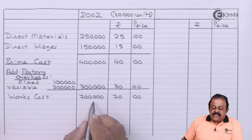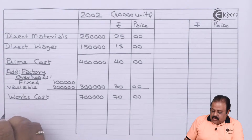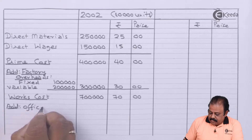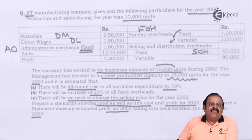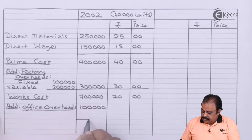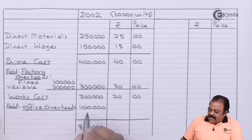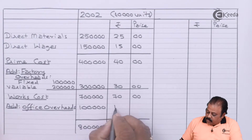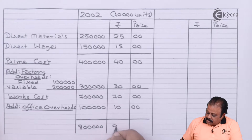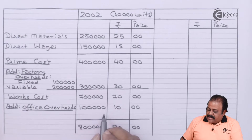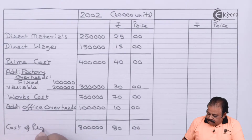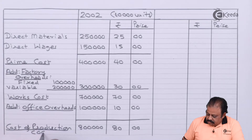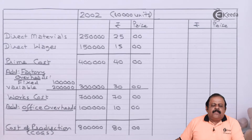We got works cost of ₹7,00,000. To this we are going to add office and administration overheads, which are totally fixed at ₹1,00,000. Per unit office overheads: ₹1,00,000 divided by 10,000 units equals ₹10 per unit. Works cost ₹7,00,000 plus office overheads ₹1,00,000 gives cost of production ₹8,00,000. In this question, there is no opening or closing stock of finished goods, so cost of production is itself the cost of goods sold.